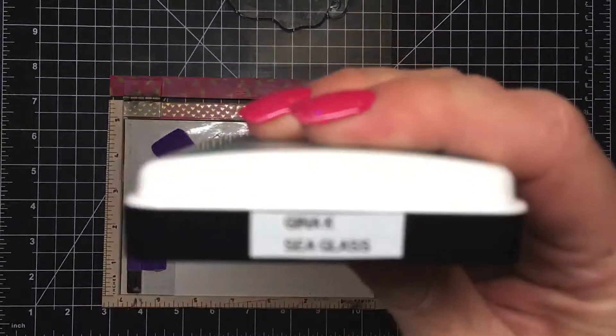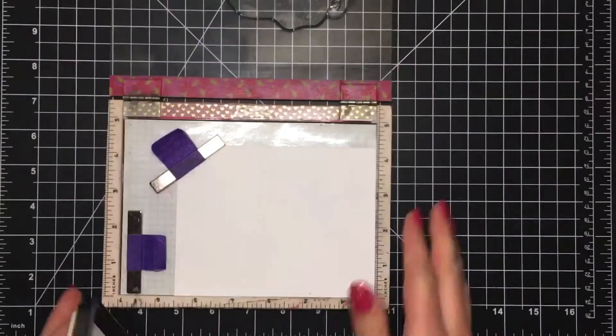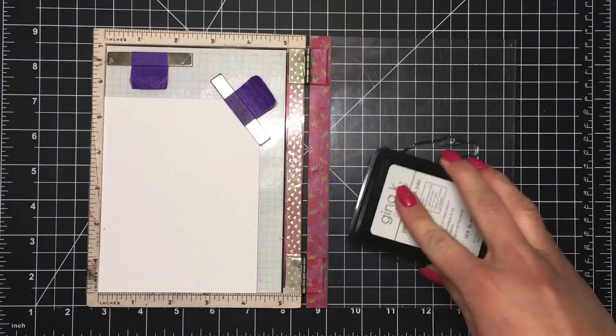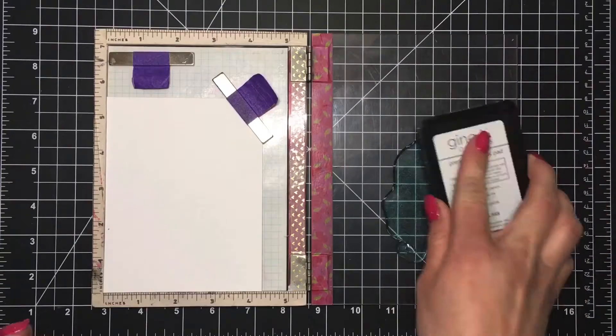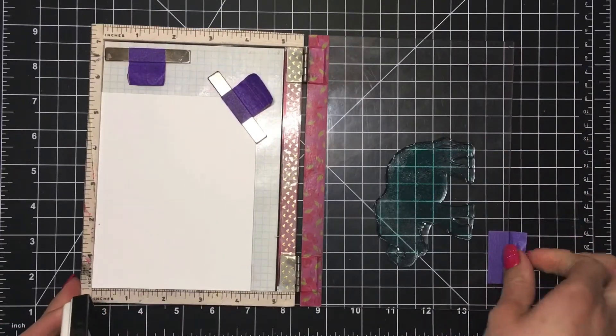I will be using that big elephant and I'm starting out with Gina K Sea Glass ink. I will ink up the entire elephant with this color and stamp that down onto that Cougar cardstock.